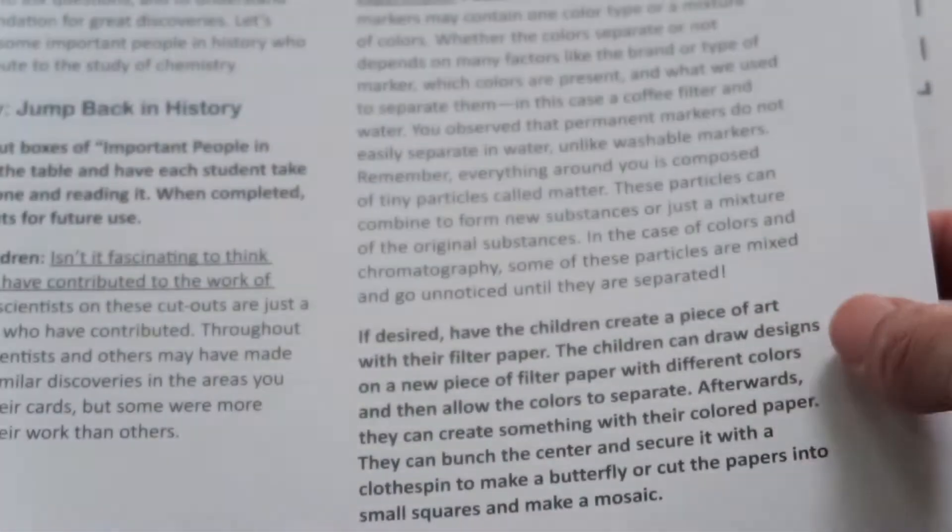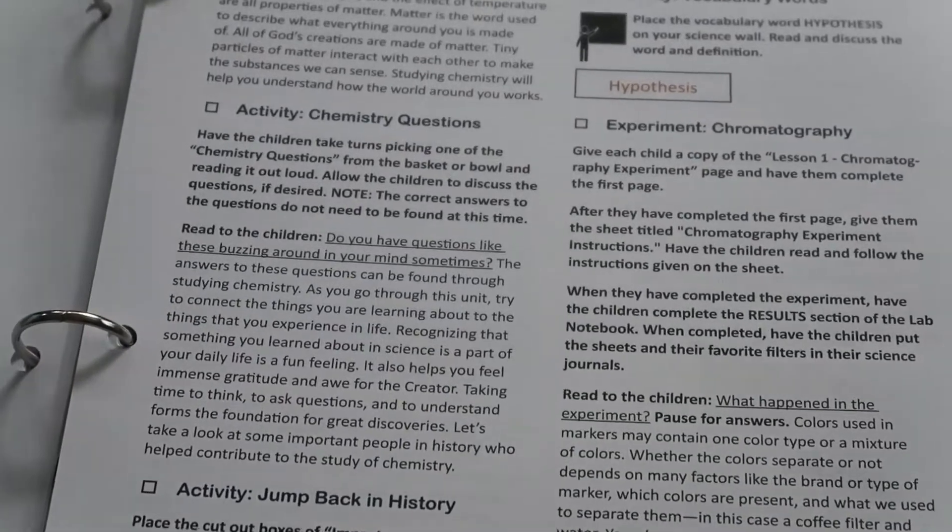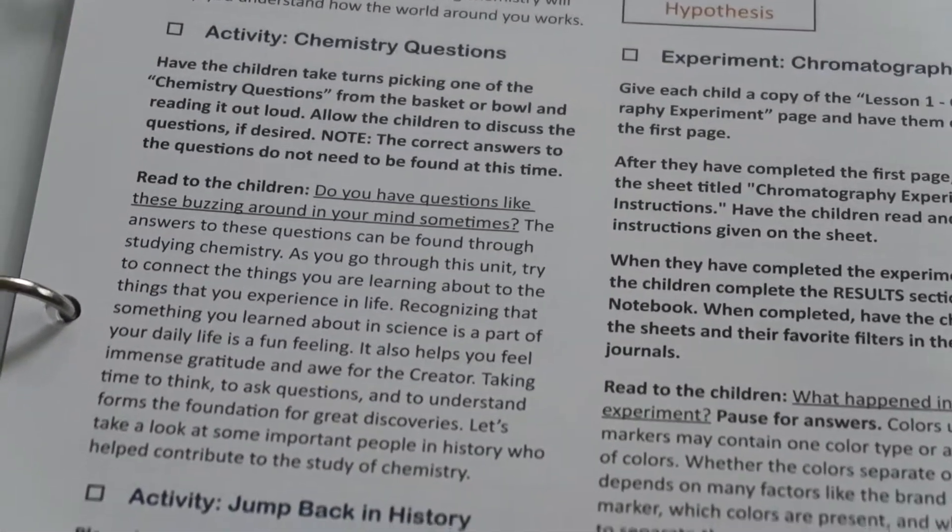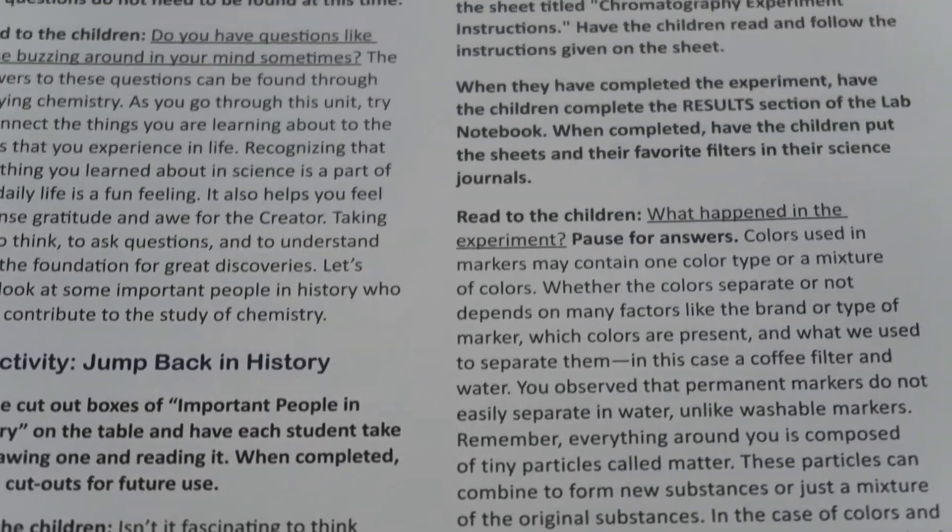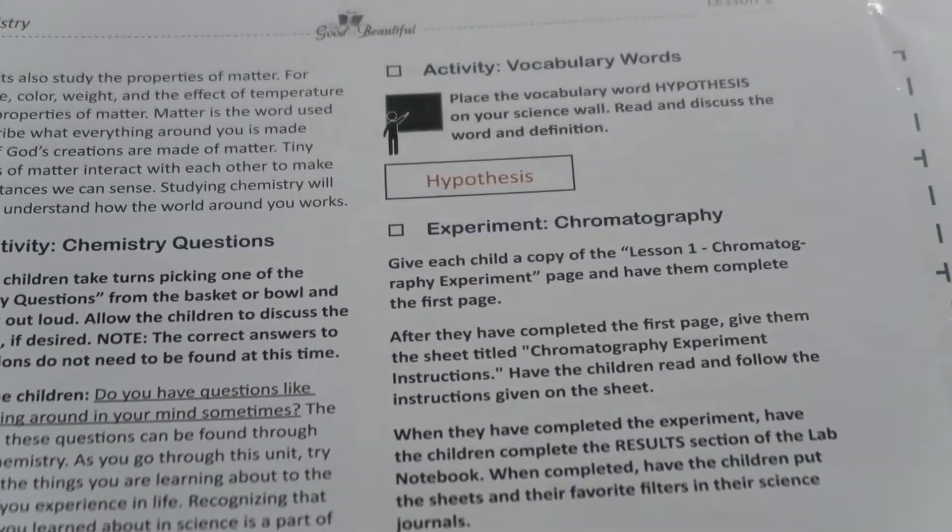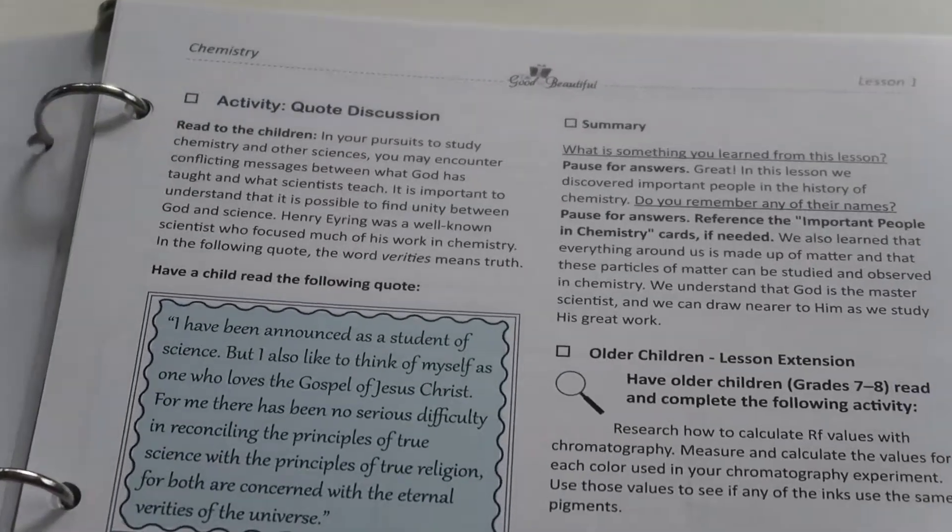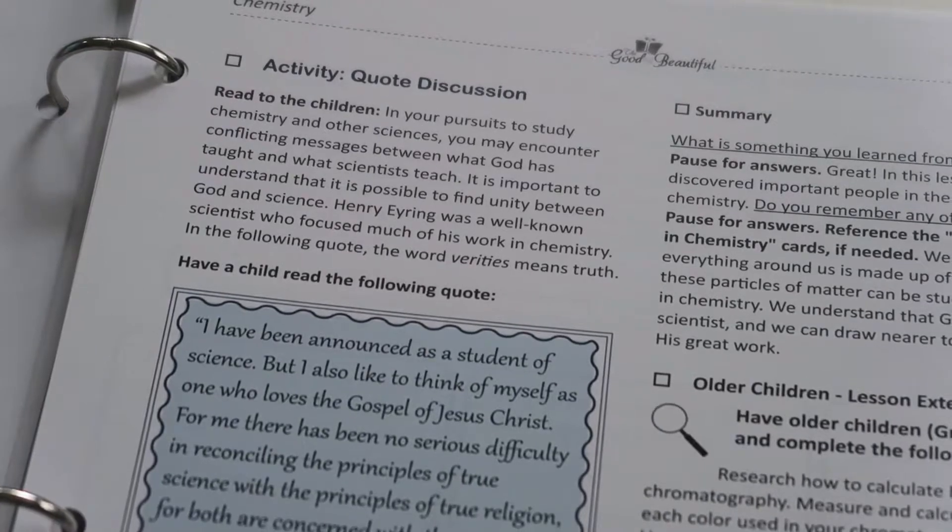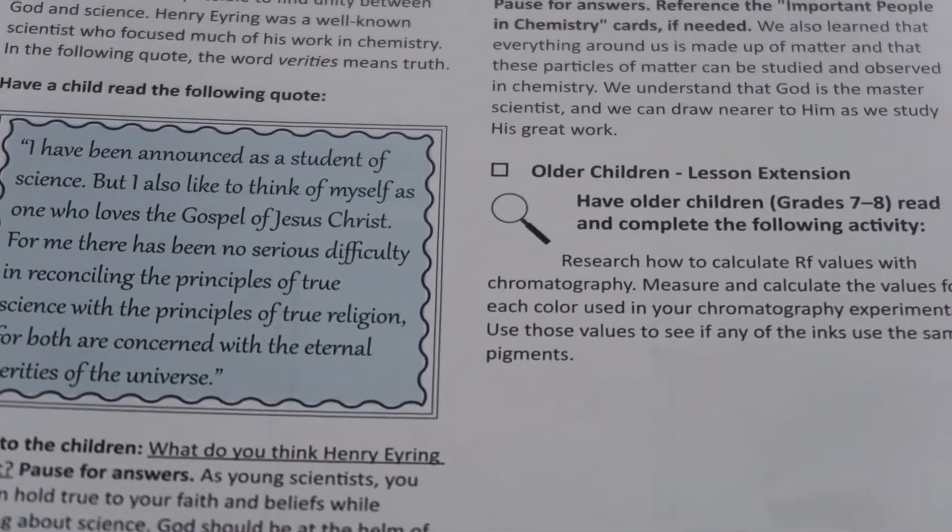It tells you more things to read to the child. And then you have all of your activities. So for this one, you have chemistry questions for your activity, then you have a jump back in history activity, then you have a vocabulary word, and then you have an experiment. There's also, in this specific lesson, quote discussion, there's a quote here that gives you the opportunity to talk to your children about what that quote means.